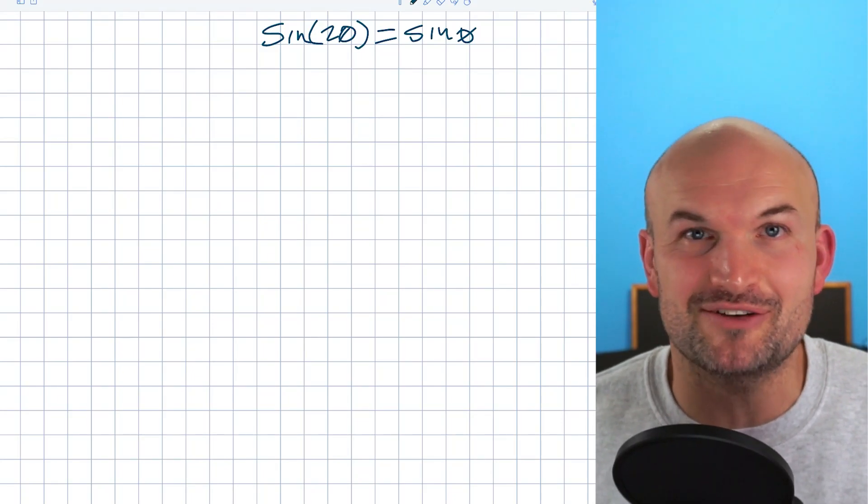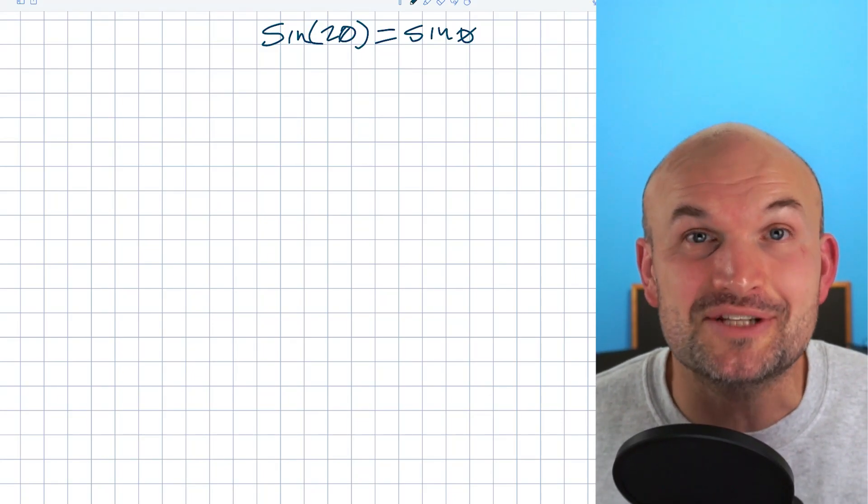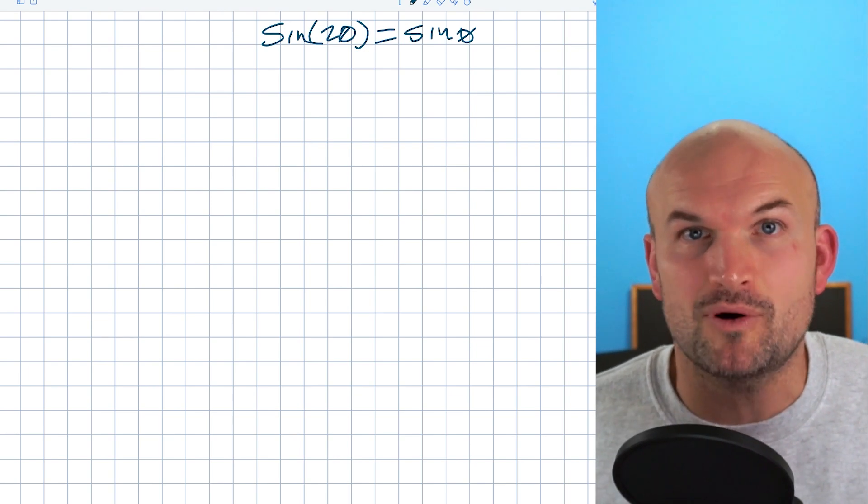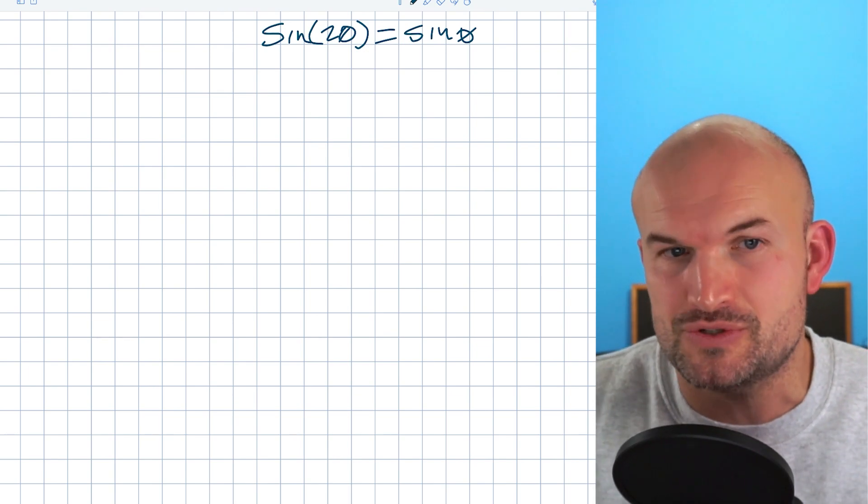So on a problem like this, students usually get pretty confused with this double angle and they don't apply it effectively. So it's really important to know when to use your identities and when not to use your identities.